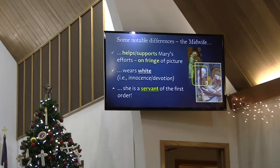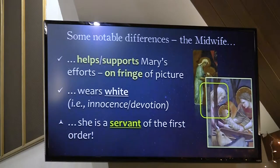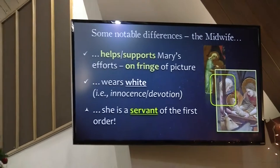Something else that's different tonight is the midwife. Last week, the midwife in Guido's painting was depicted as being apart from the scene — a little character, kind of like a little inset. But tonight, the midwife takes a larger role. She is depicted on the left-hand side of the painting as helping and supporting Mary. Mary is trying to lay the baby into the manger, and the midwife is there to literally lend her hand. She's out on the fringe of the picture, and she wears white — which in Renaissance art is a reference to her innocence and devotion. This is a woman who is a servant of the first order.